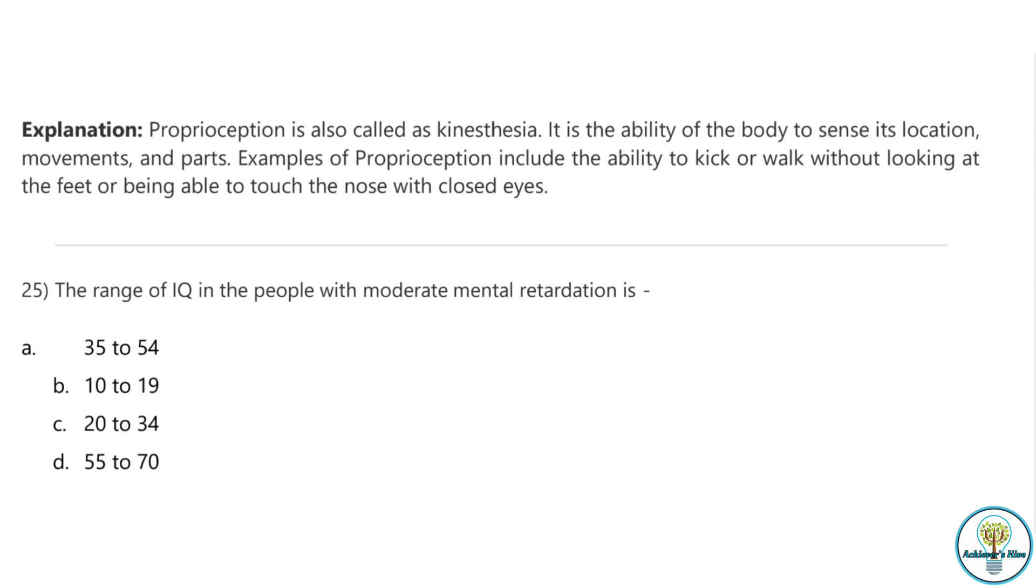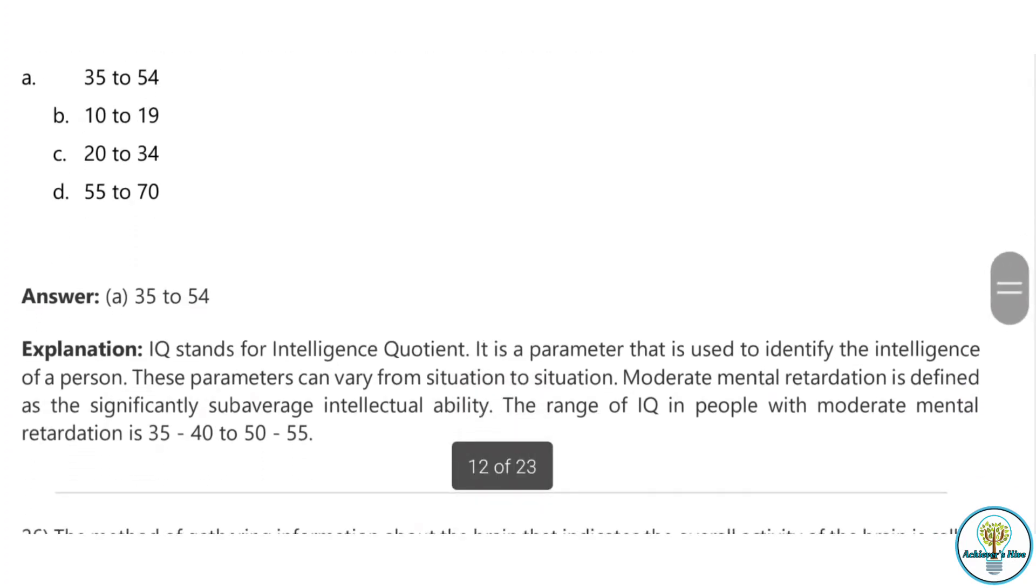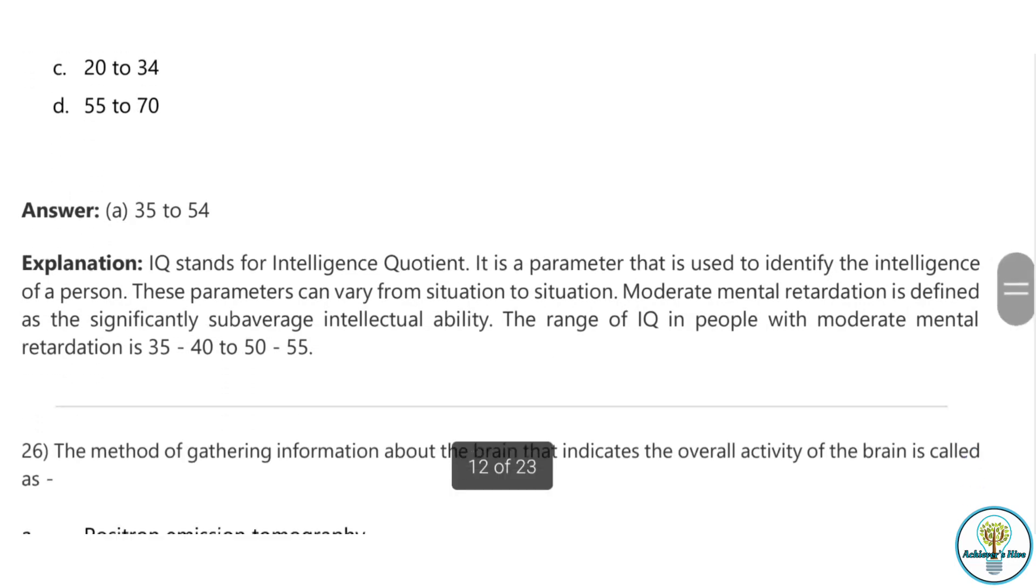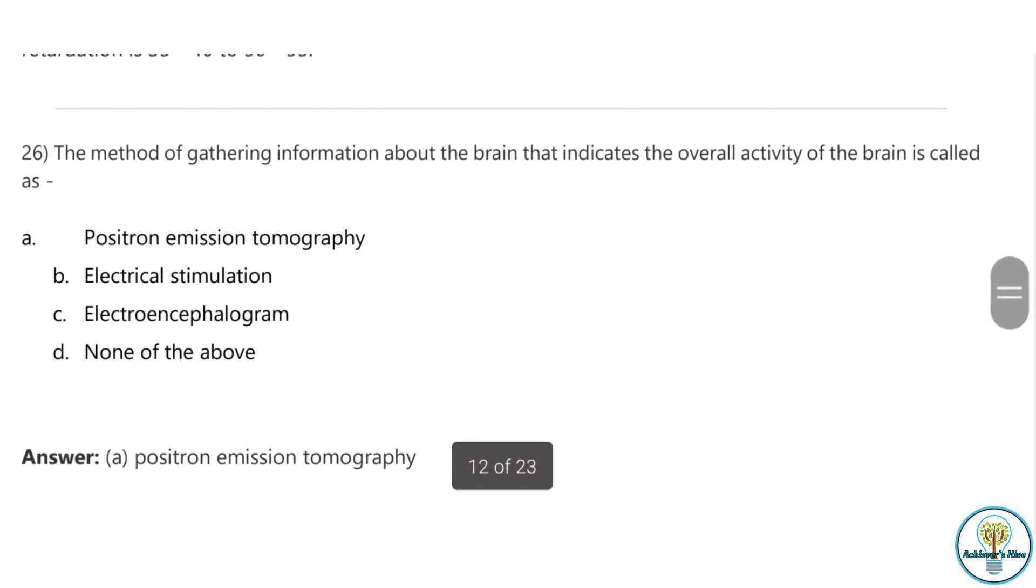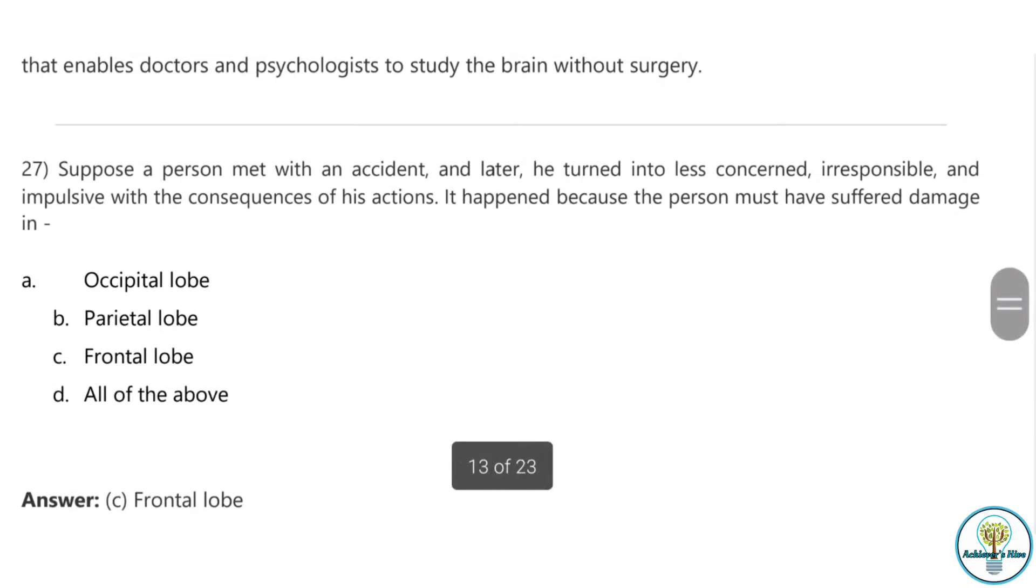Question twenty-five: The range of IQ in people with moderate mental retardation is 35 to 54. Question twenty-six: The method of gathering information about the brain that indicates the overall activity of the brain is called positron emission tomography. PET is a technique for imaging the brain in action. The PET images show the active brain regions.